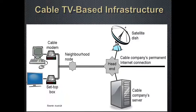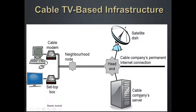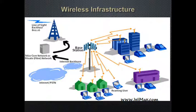Cable TV-based infrastructure provides a popular medium for pushing high-speed data to homes. It involves a cable modem and a set-top box through which you can access channels from a satellite dish or the cable company's server. The cable company has a permanent internet connection and receives channels from satellites; it then delivers them to your set-top box, and from there to your TV or laptop.